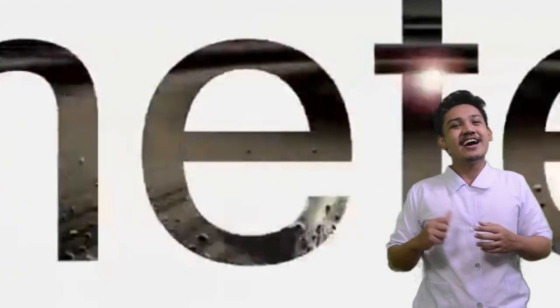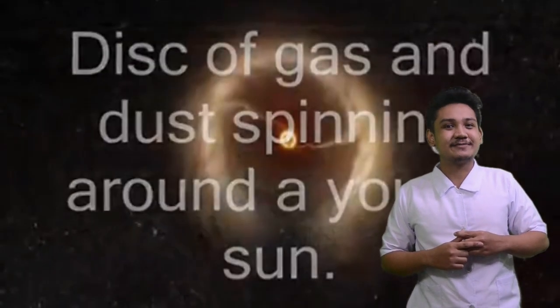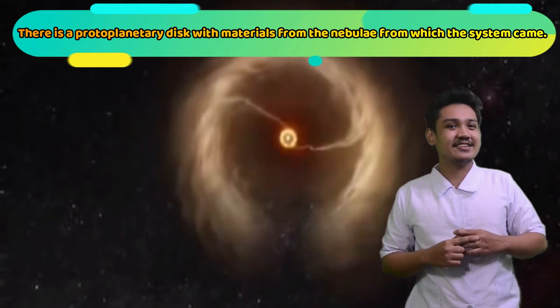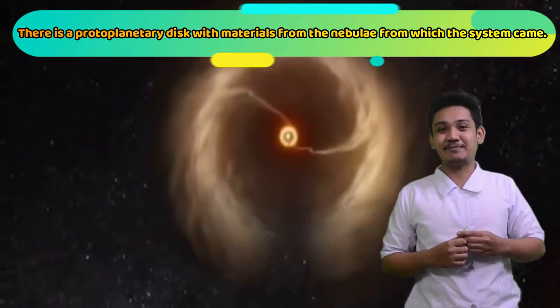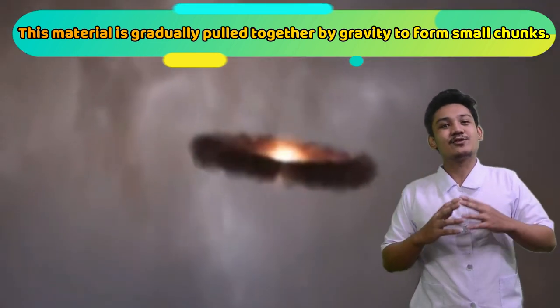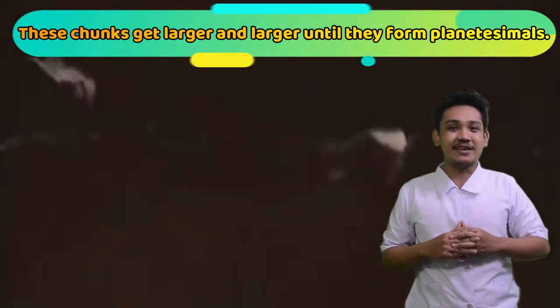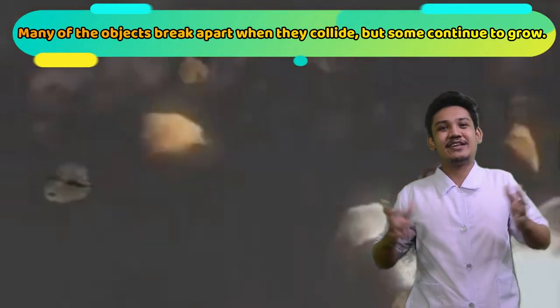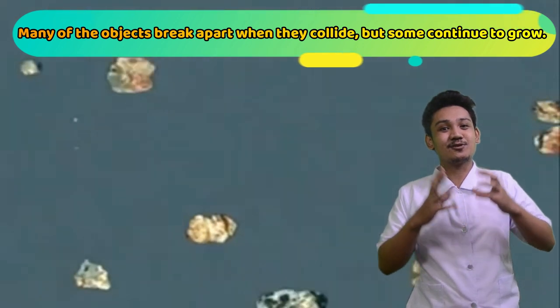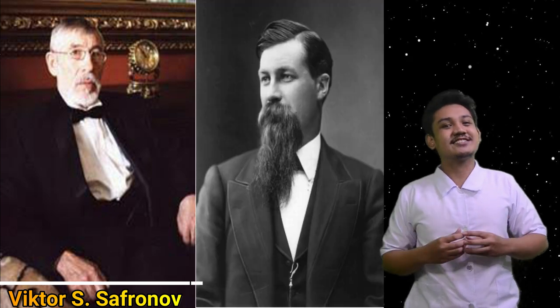The second theory is Planetesimal Theory. A theory on how the planets form. According to this theory, when a planetary system is forming, there is a protoplanetary disc with materials from the Nebula from which the system came. These materials is gradually pulled together by gravity to form small chunks. These chunks get larger and larger until they form planetesimals. Many of the objects break apart when they collide, but some continue to grow. Some of these planetesimals go on to become planets and moons. It was proposed by Victor S. Safronov and developed by T.C. Chamberlin and F.R. Moulton.